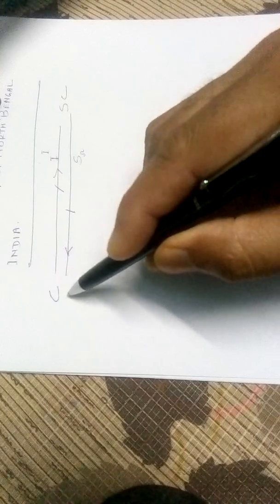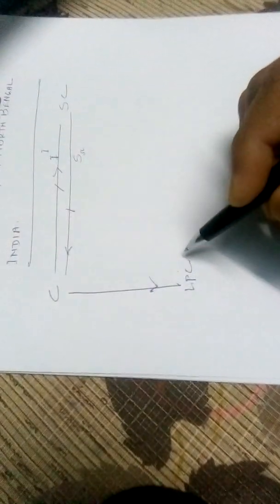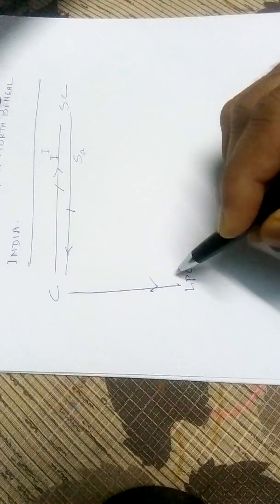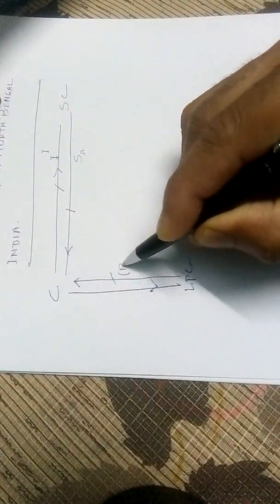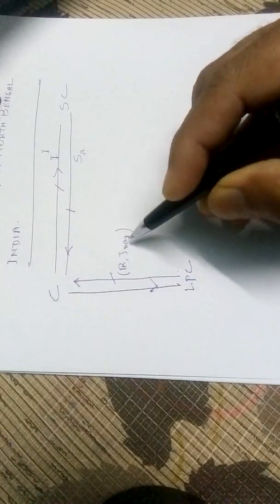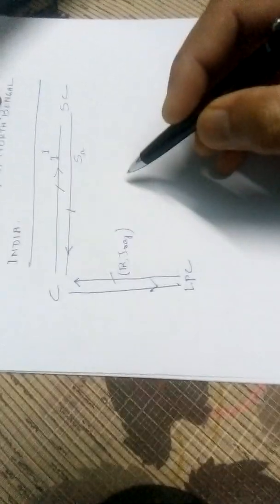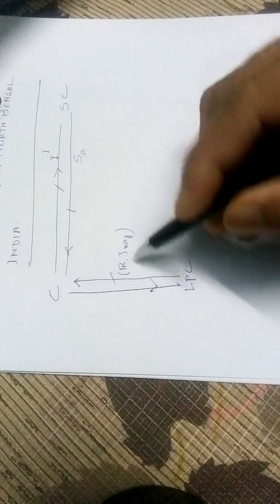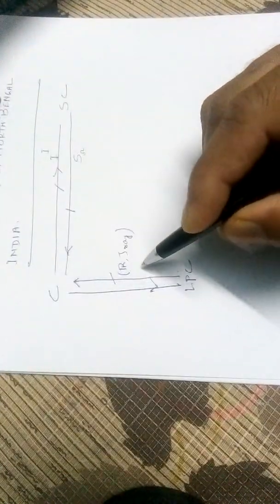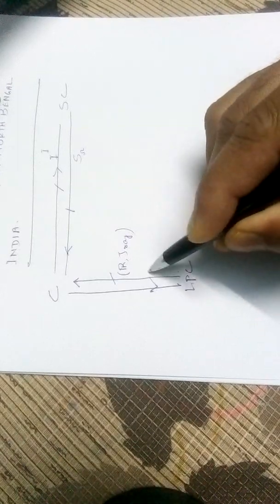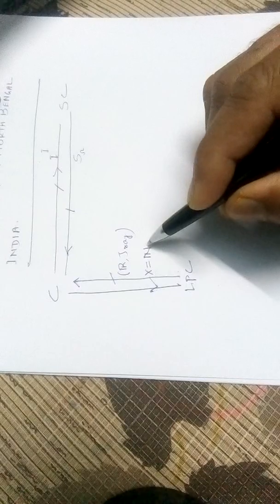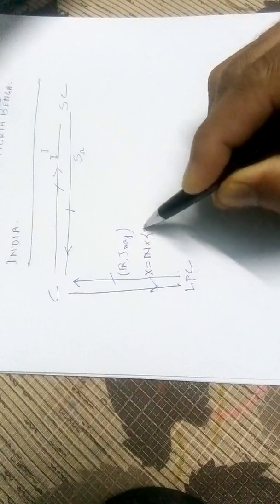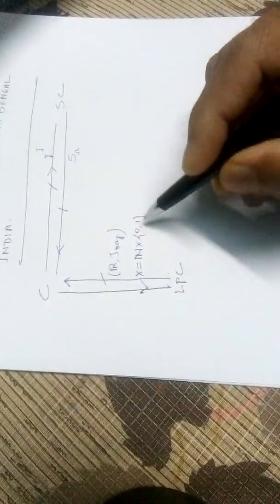We also saw that every compact space is limit point compact, so compactness implies limit point compactness. But there are limit point compact spaces which are not compact. For example, R with the topology tau_ray, where tau_ray is the topology on R consisting of all right open rays including R and the empty set phi, is limit point compact but not compact.